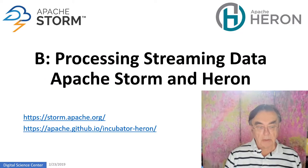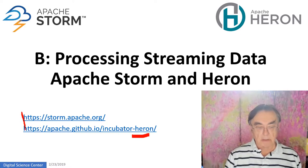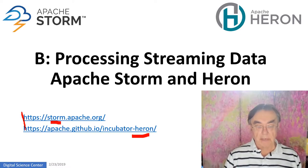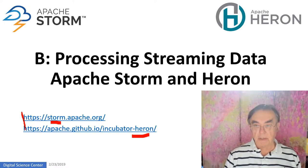We're going to look at Storm and Heron. Heron is a successor to Storm. Both came from Twitter. They have similar architecture. Heron supports the API of Storm and just runs faster.